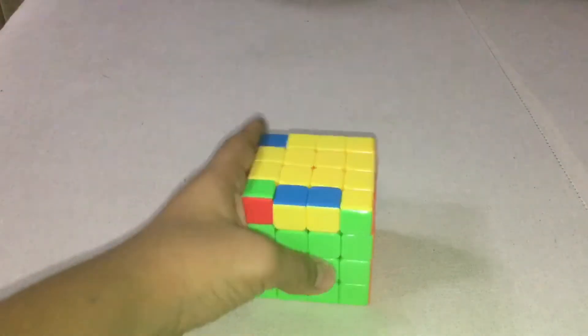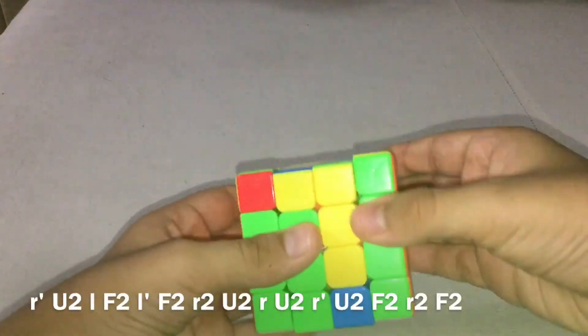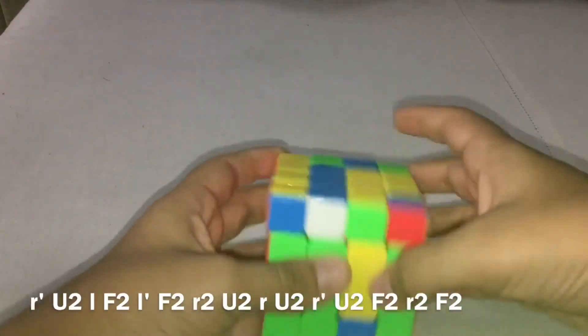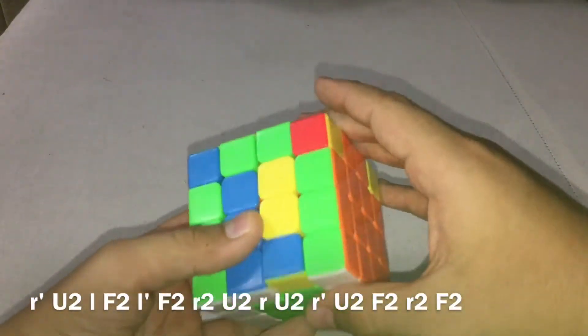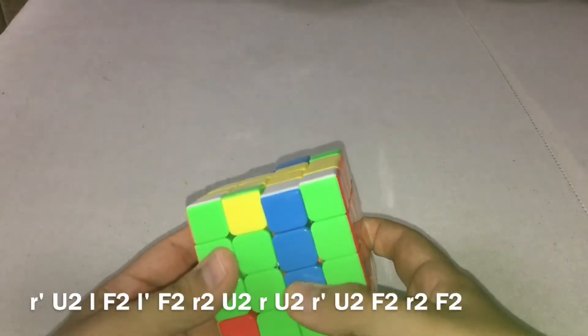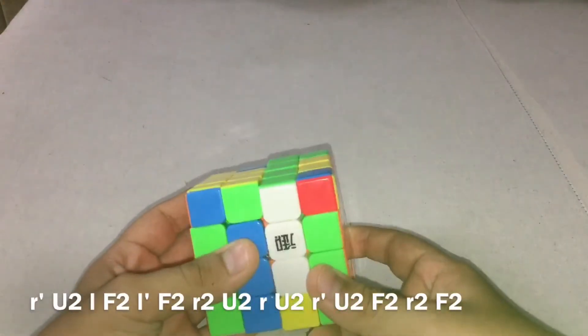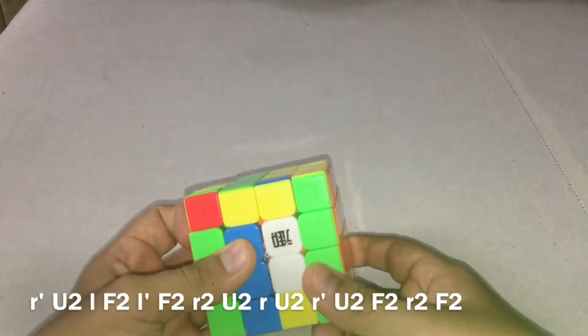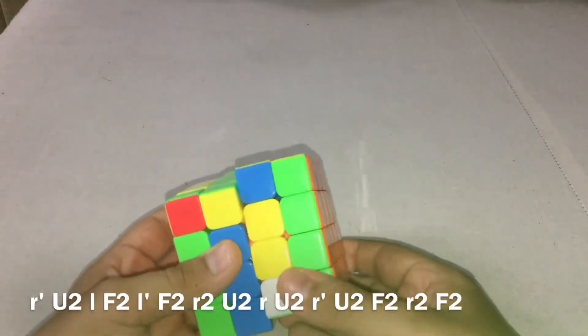So like I said you hold it like this and you put slice this down, R prime, then you do a U2, slice this down and do an L, then F2, and then slice this back up, L prime, F2 again, and then you do R2 U2 R slice.